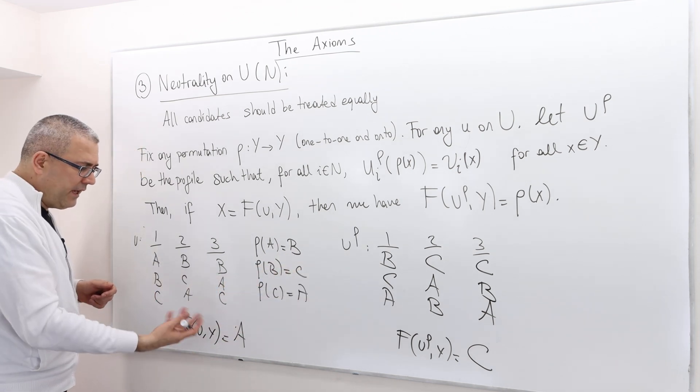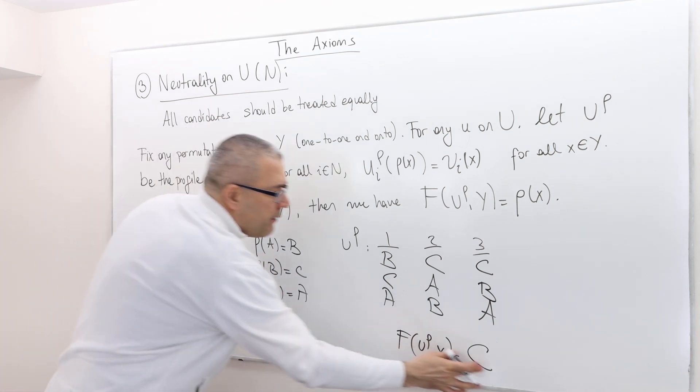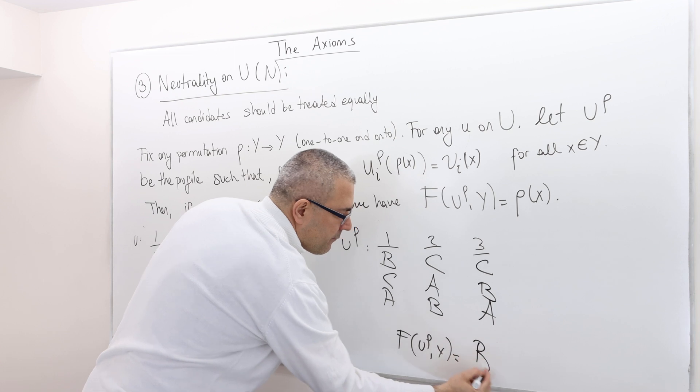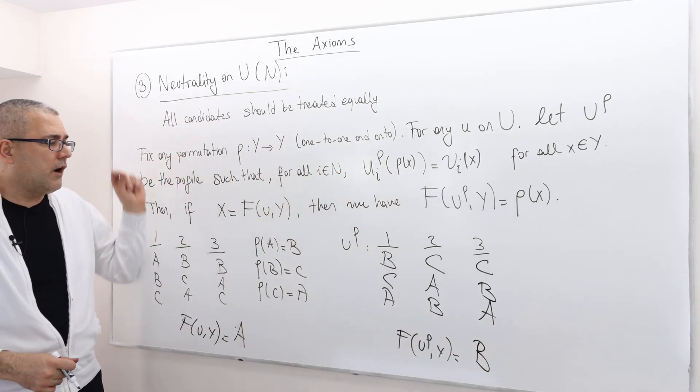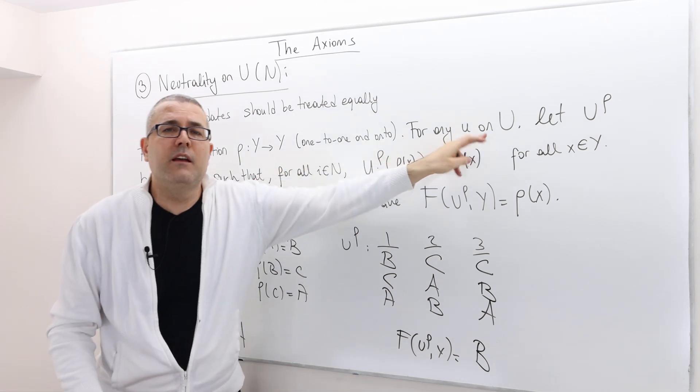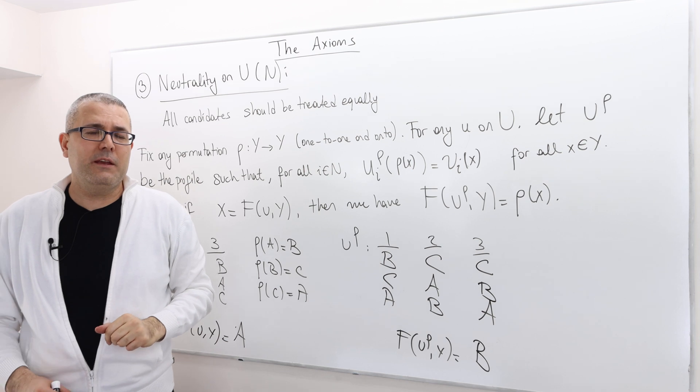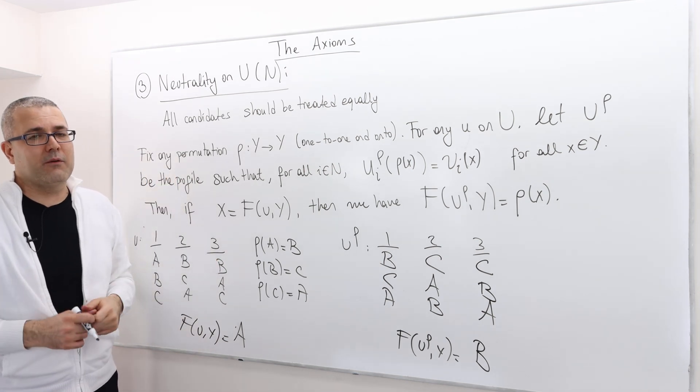according to this permutation, B should be selected here. And again, this has to hold for every permutation and for any preference profile. This is what neutrality is. And I hope that was clear.